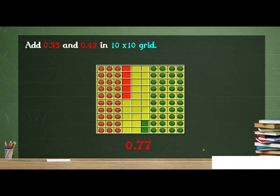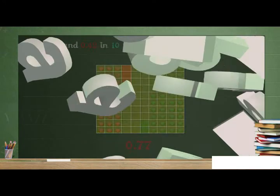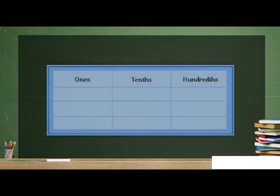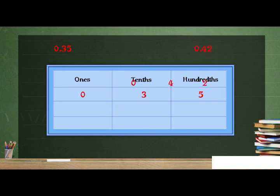Now let us see in place value chart. In this chart, we put 3 at tenths place and 5 at hundredths place. And in 0.42, we put 4 in tenths and 2 at hundredths place.